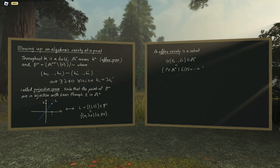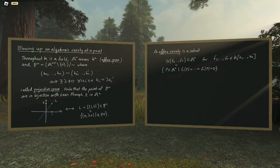If we take some polynomial equations f1 through fr with coefficients in the field and n variables, we can evaluate such a polynomial on a point of AN. The notation V(f1, ..., fr) means the set of all simultaneous zeros of all of those functions. That's an affine variety.